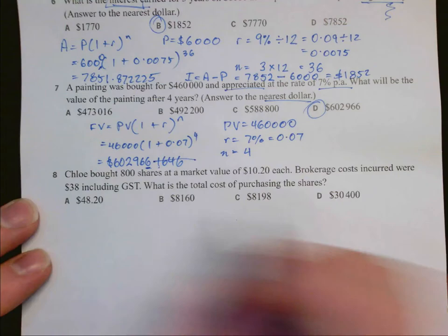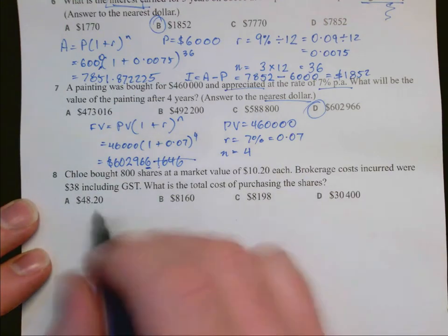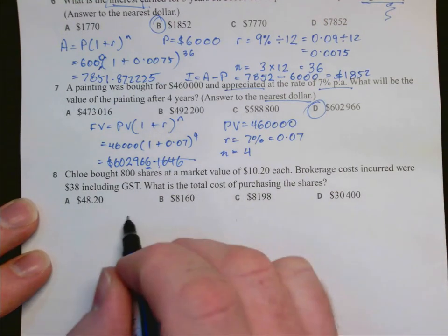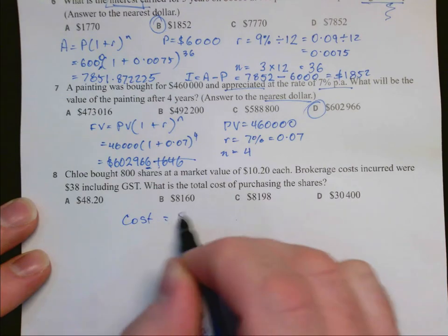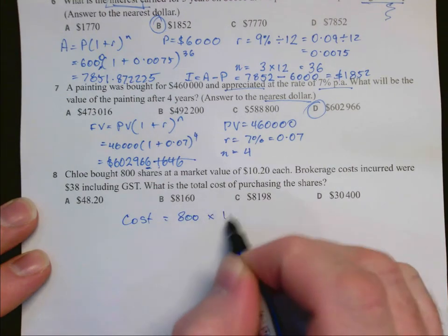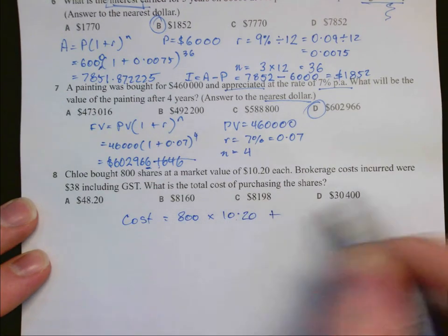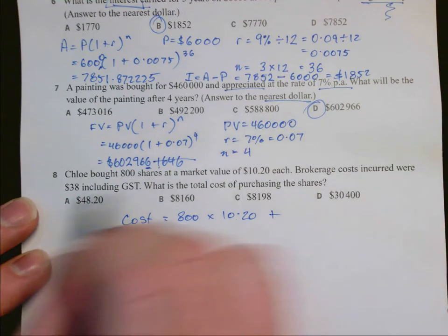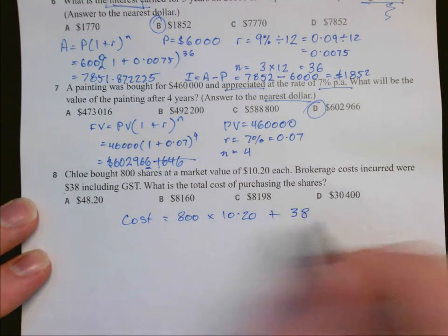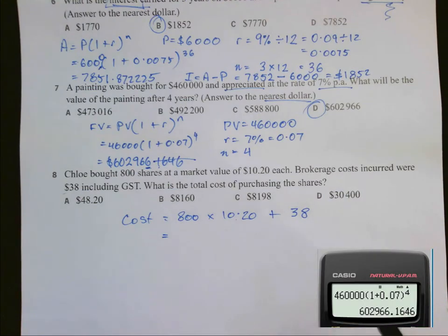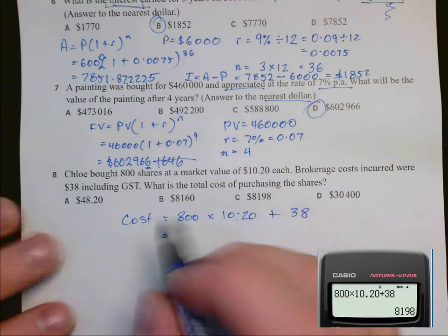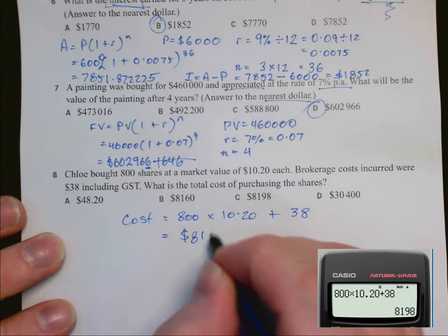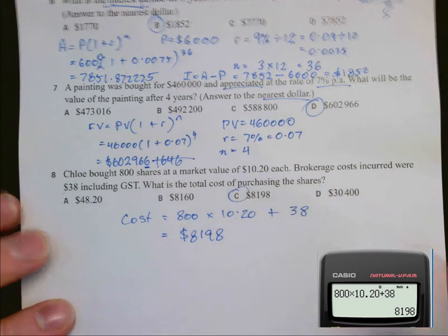And question 8: Chloe bought some shares. We need to find the total cost. She has to pay for 800 shares at $10.20 each, plus she's paying a brokerage cost. This is a one-off fee, so we just add that once. On the calculator, that's 800 times $10.20 plus $38, and we get $8,198, which is answer C.